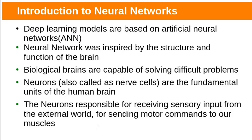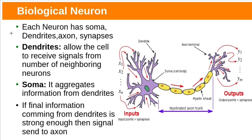Deep learning models are based on artificial neural networks. ANNs are inspired by structure and function of human brain. Biological brains are capable of solving difficult problems. Neurons or nerve cells are fundamental units of the human brain. Typical biological neuron consists of cell body also called soma, dendrites, axon and synapses.